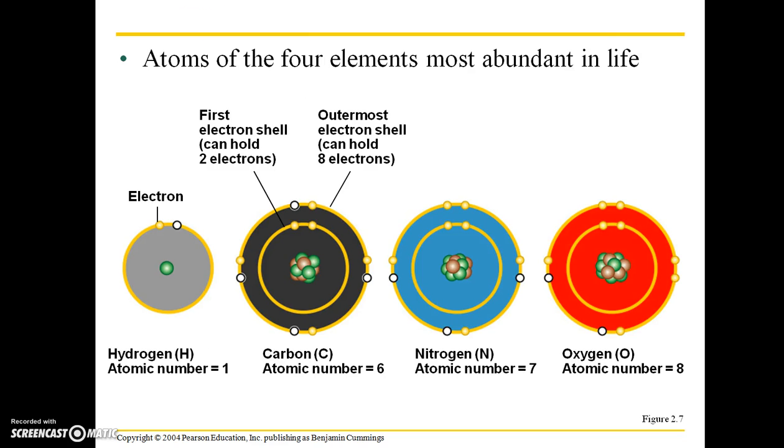Here are depictions of the atoms of the four elements that are most abundant in life. You see an electron here around a hydrogen nucleus. The presence of electron is denoted by this yellow circle. If there's not a full shell of electrons, there's going to be a white circle. That means that there's a place for an electron there, but there's not currently an electron around that nucleus. That first electron shell can hold two electrons. The outermost shell can hold eight electrons.